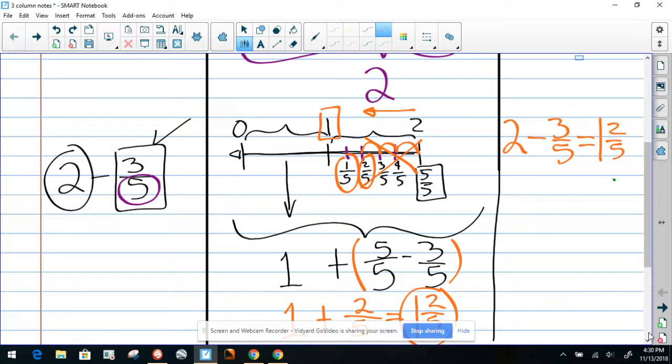We can also rewrite this as, because this one equals, this part equals 5/5. We can say that 5/5 plus 2/5 equals 7/5. So again, we can rewrite this as an improper fraction.